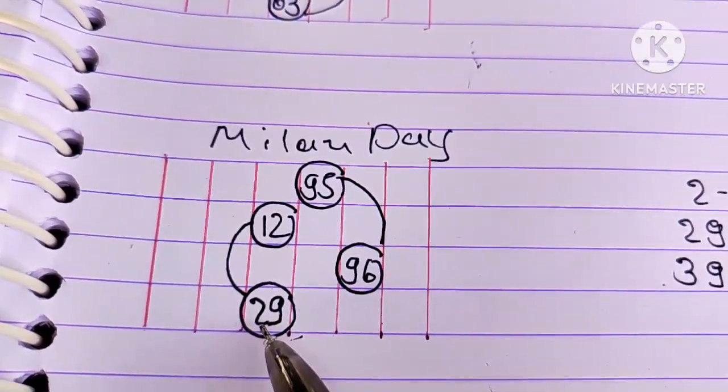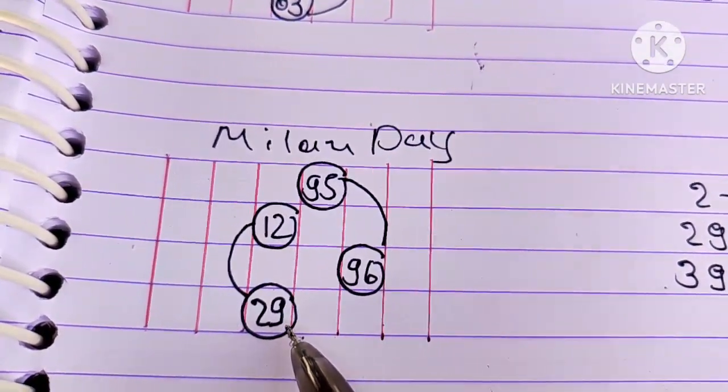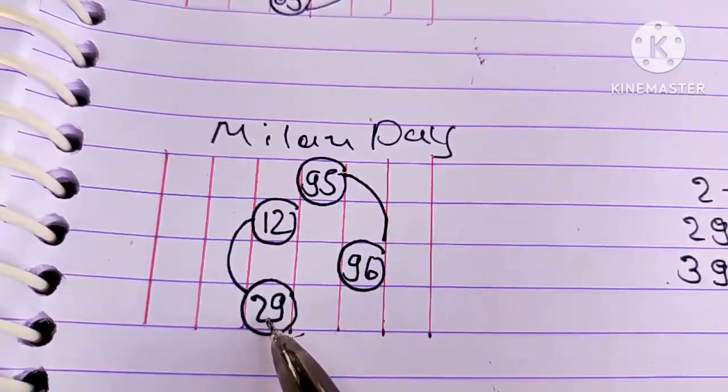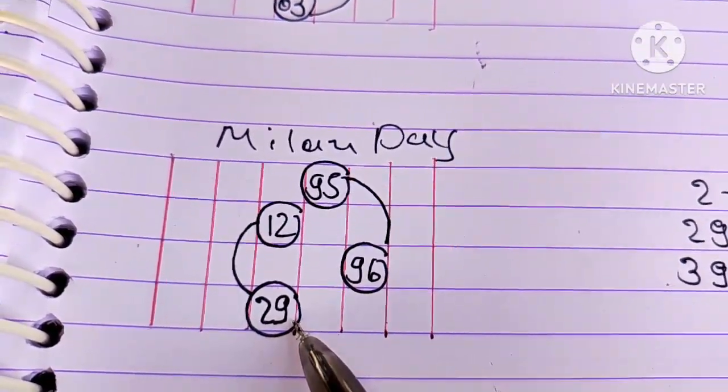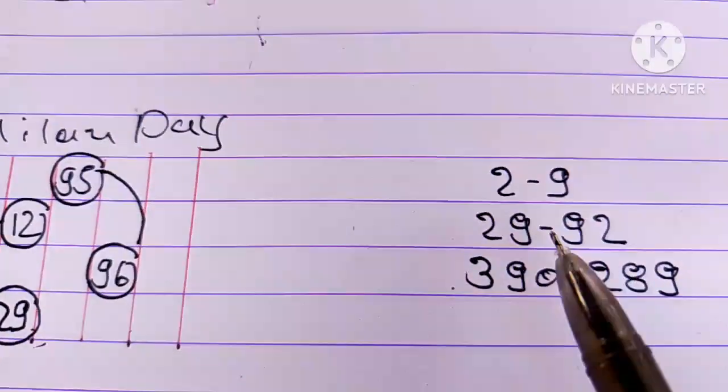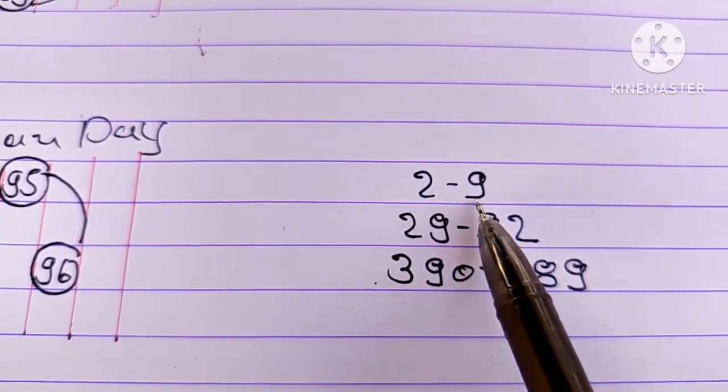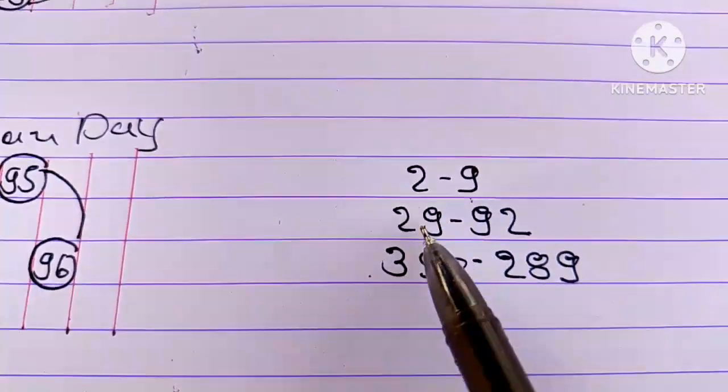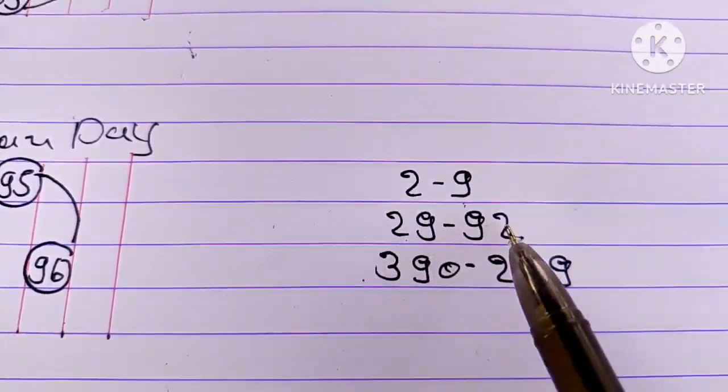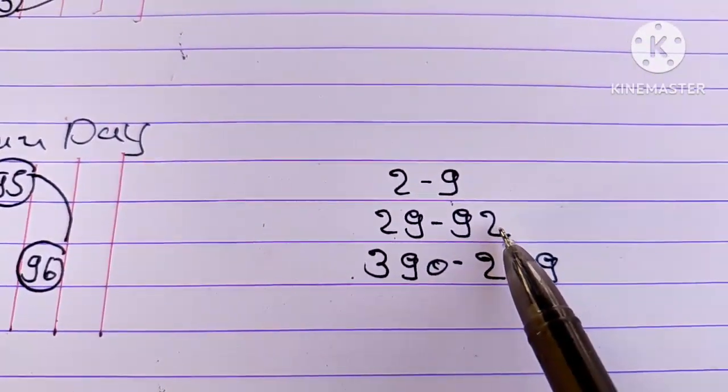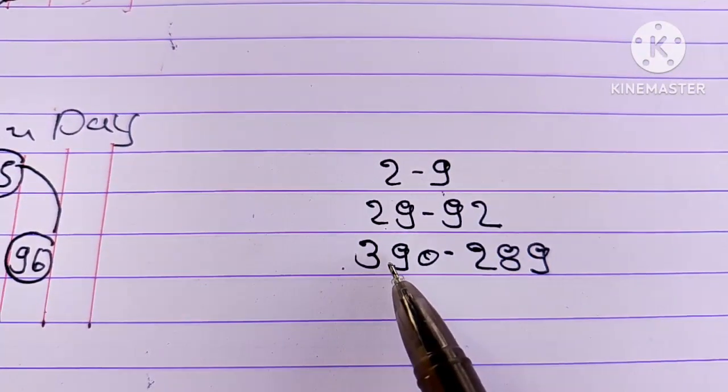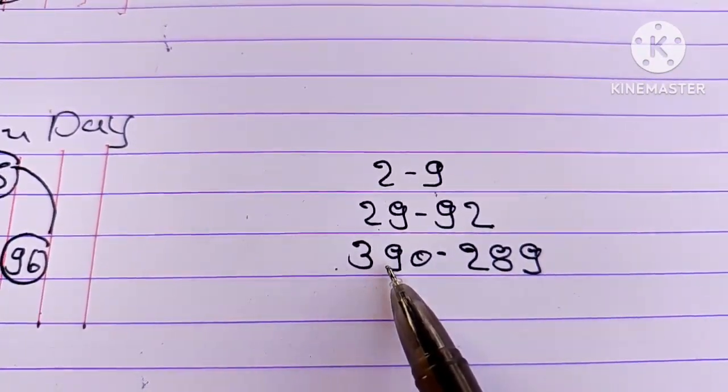Single 1-2. Single 9. Single 2-9. OTC 2-9. Strong 2-9, 9-2. Strong 390.